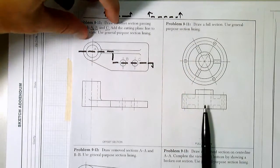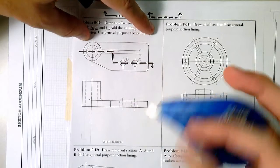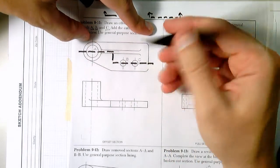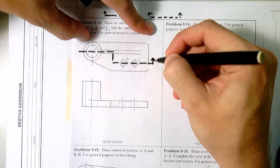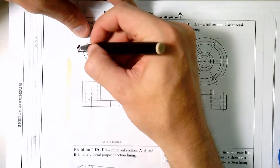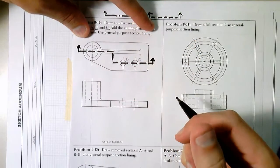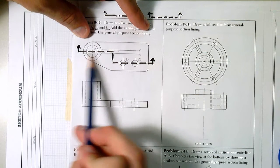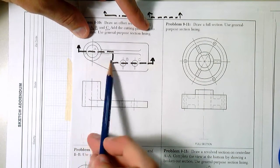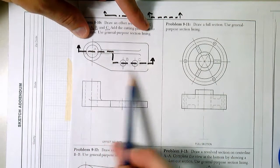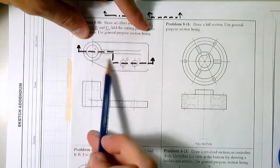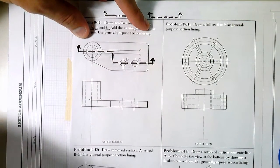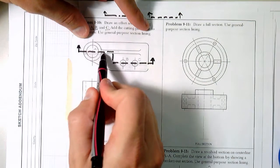And then we'll actually look this way, we'll actually look towards this direction. So when we say that, that basically means we're pretending that all of this part of the object is gone. We're eliminating all of this stuff, and we're only drawing all the stuff that's right in here.